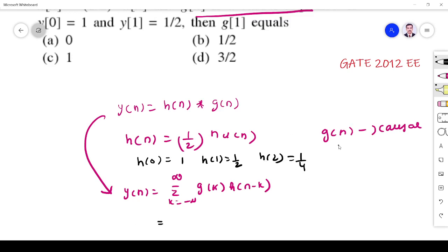So you see this is causal sequence. Causal sequence means it has only positive value. So g should take only positive value. Here k starts from negative. Since it is causal,